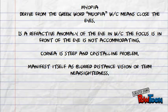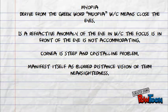Myopia is derived from the Greek word meaning 'to close the eyes.' It's a refractive anomaly of the eye in which the focus is in front of the retina — not accommodating properly. The cornea is steep and the crystalline lens is also a contributing factor.